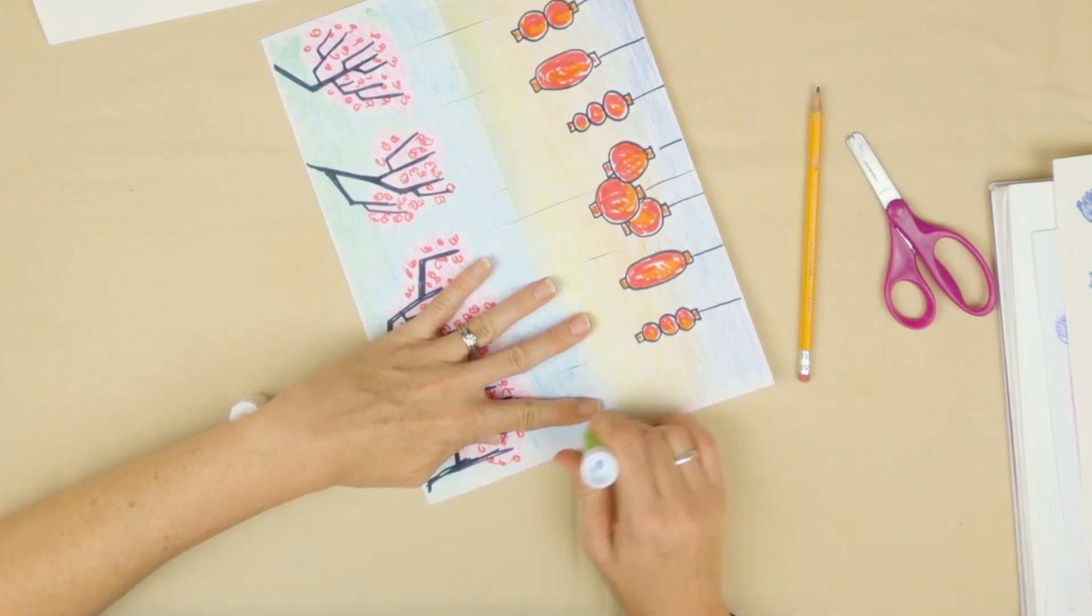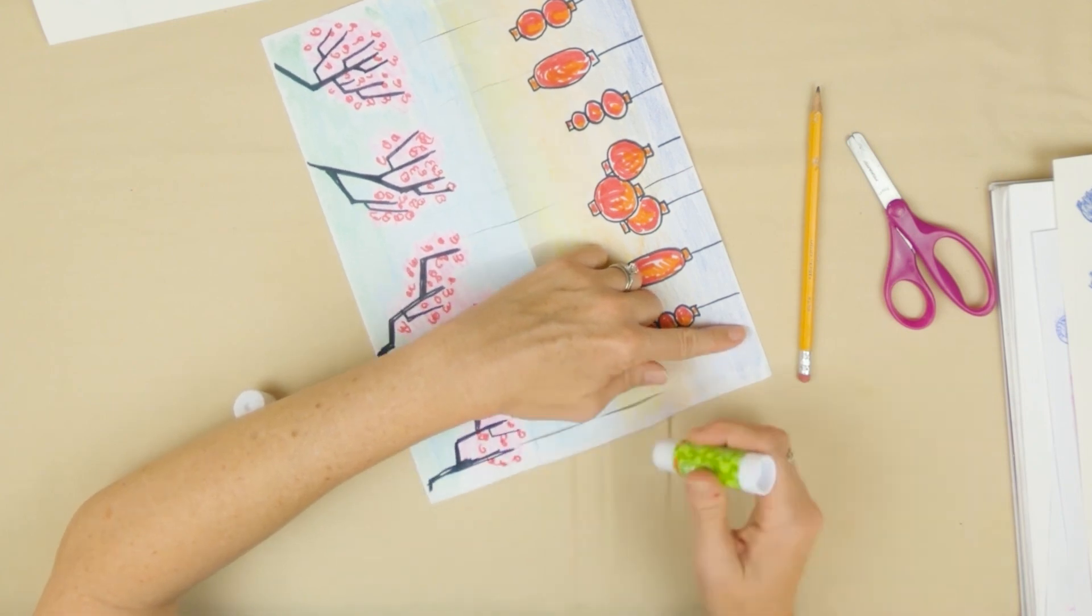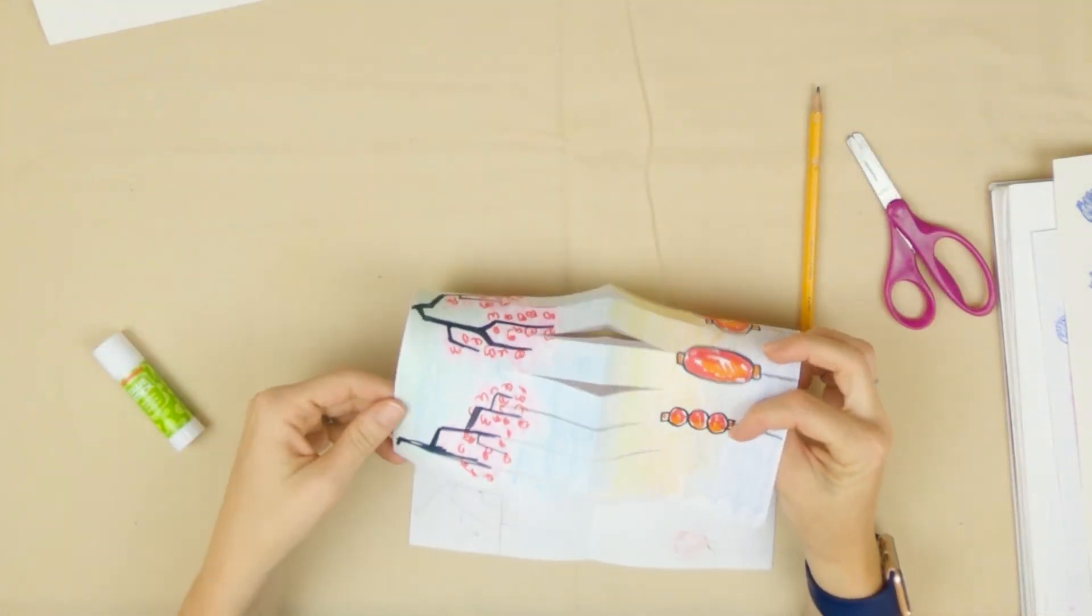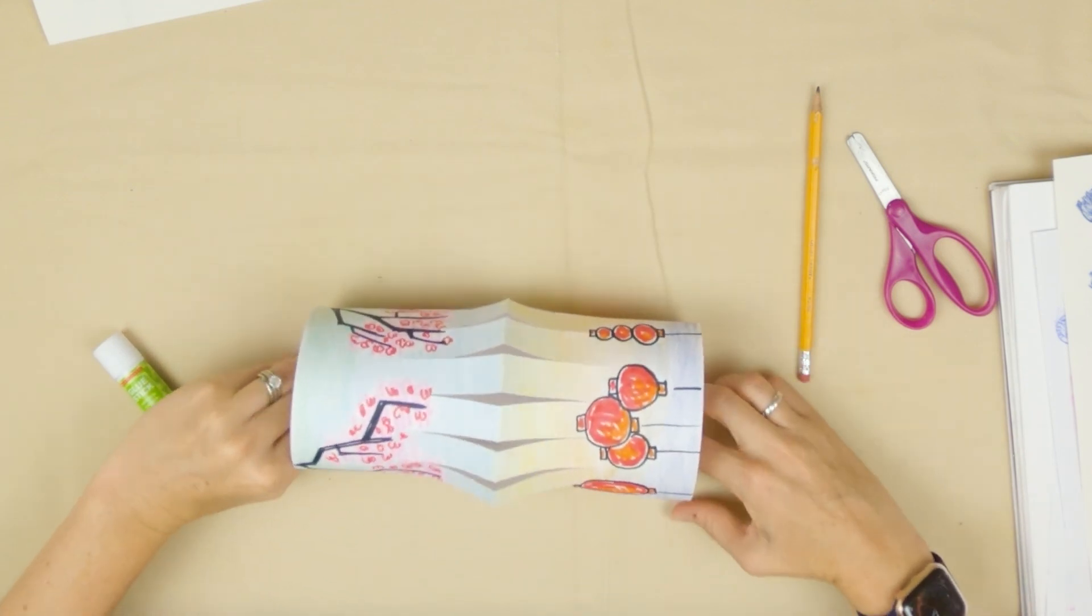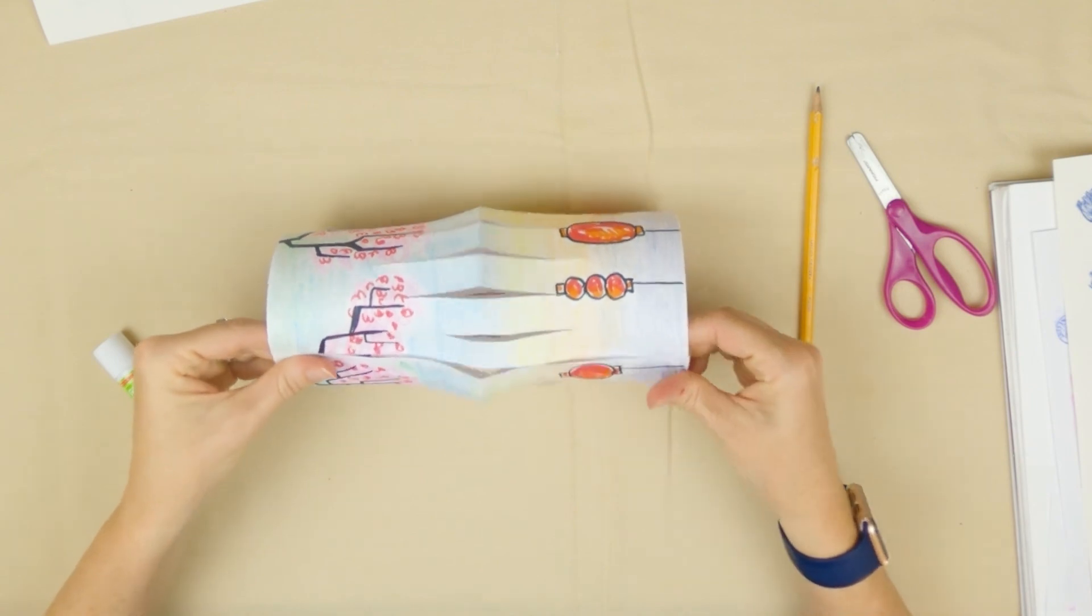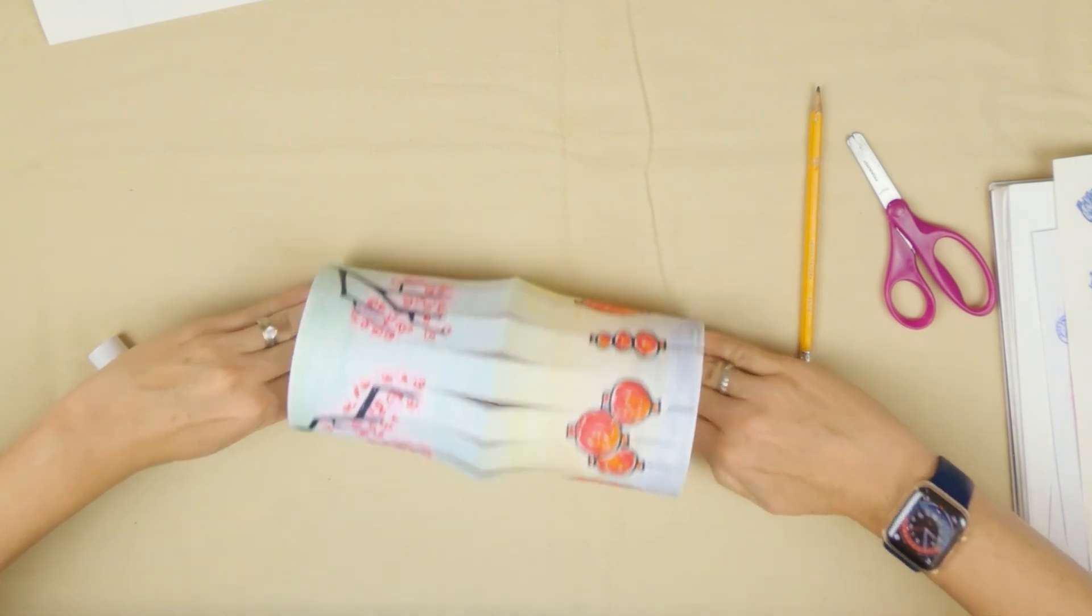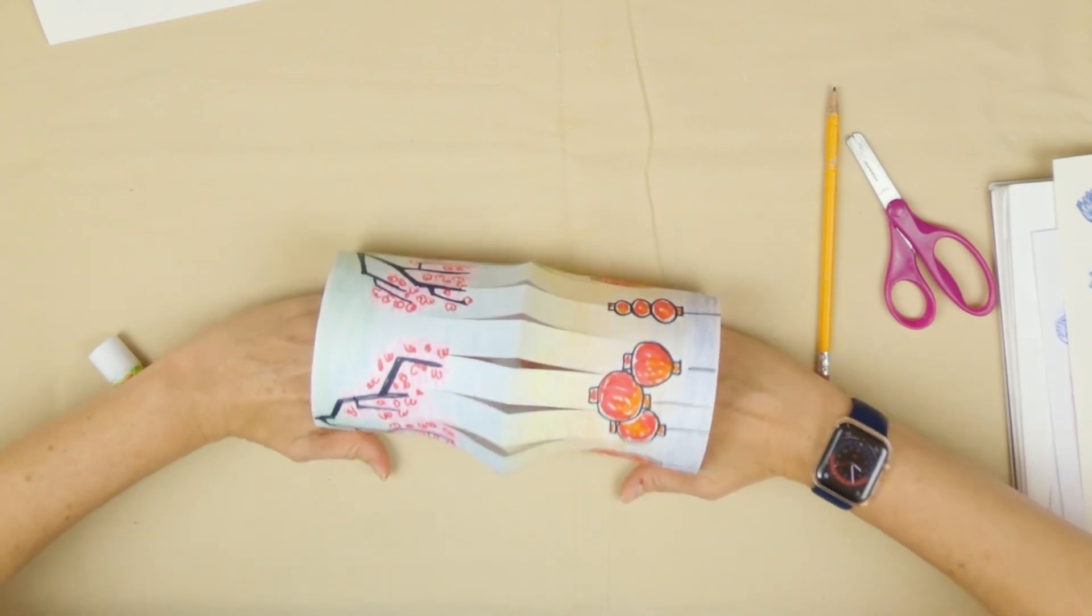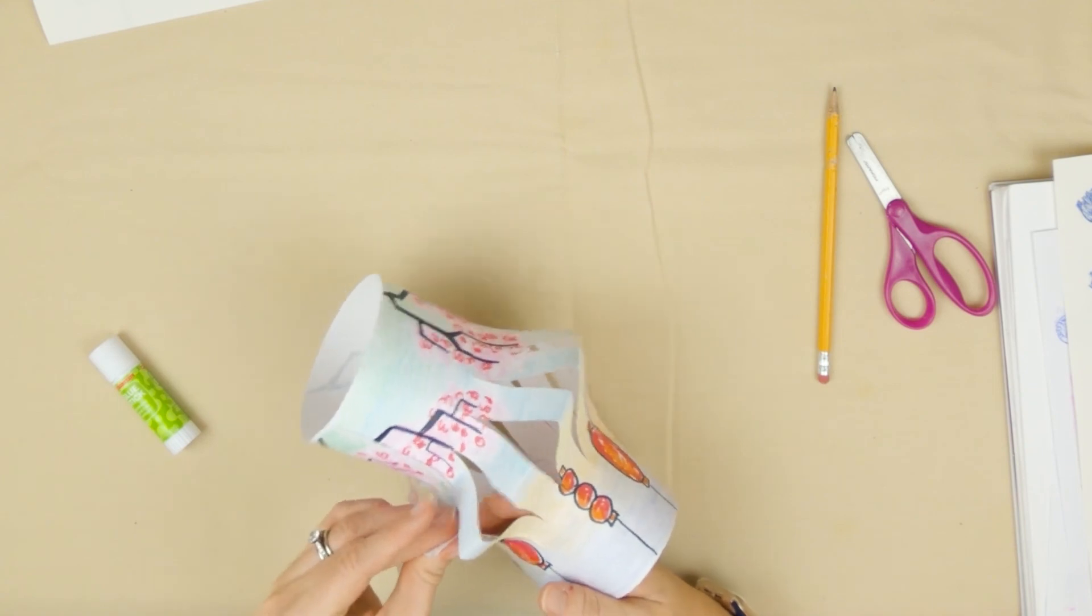I'm going to just take and put glue all the way down this edge, nice thick layer of it. Make sure you don't miss any spots. We're going to hold it to kind of help it. You're going to spin it. I'm going to put that glued piece right onto the other side. Make sure I line it up. I'm just going to press inside here and really make sure it's attaching well. I can even hold it down.